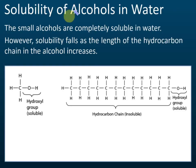Other than boiling point, another important physical property you need to know is the solubility of alcohol. The structure of an alcohol is about the same as alkane. All alkanes are insoluble in water. But some alcohols are soluble in water — for example, methanol, ethanol, and propanol are all soluble in water. Those small alcohols are completely soluble in water.